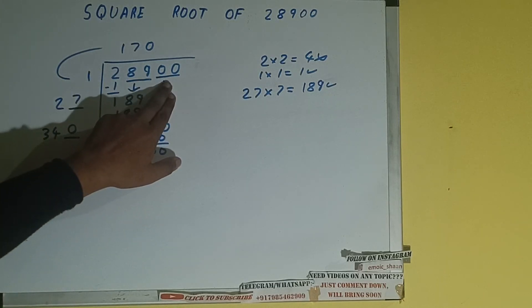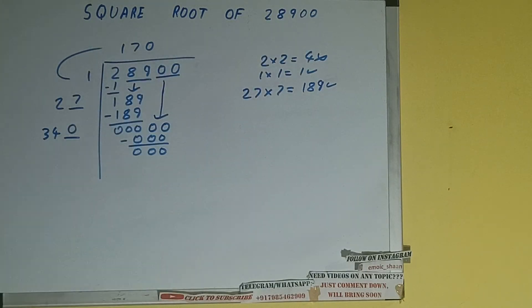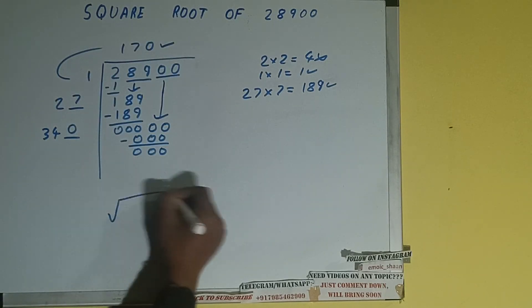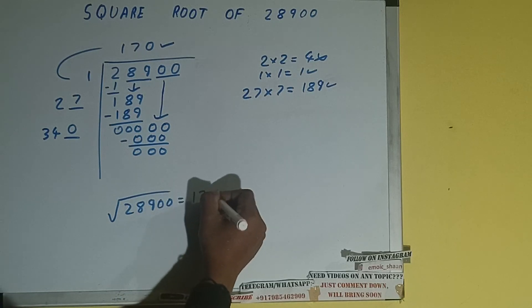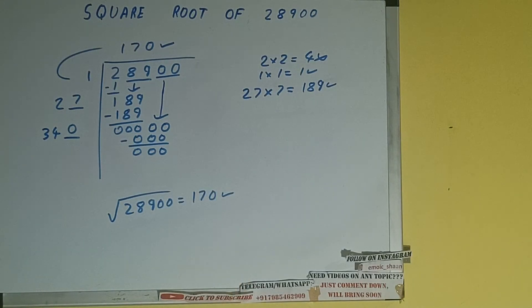That is 170. So square root of 28900 will be 170. That's it. So this is all. If you found the video helpful, please do hit the like button, do consider subscribing, and thanks for watching.